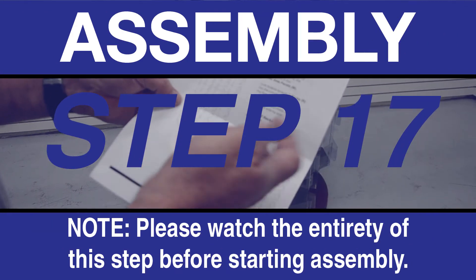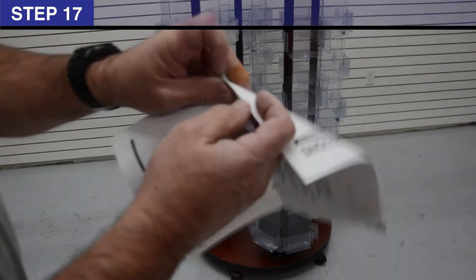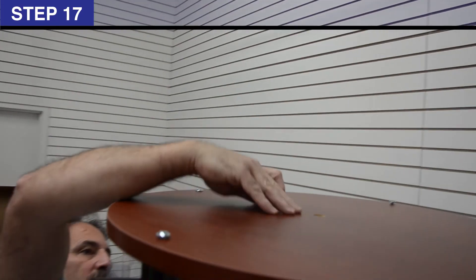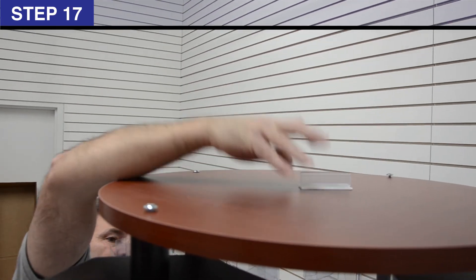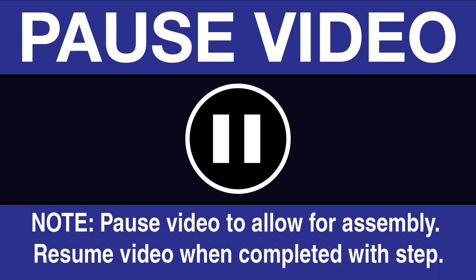Step 17: Attach header clip J in center of top plate K. Install your own header. You may need a step ladder to complete this step.